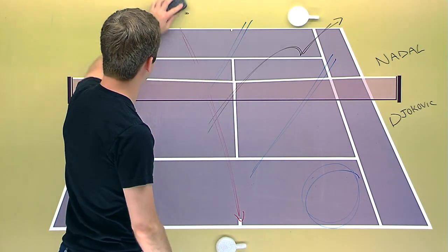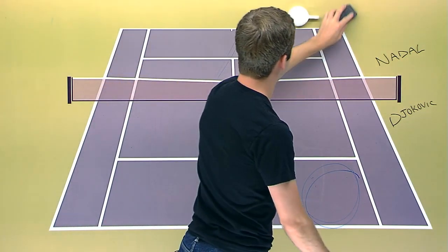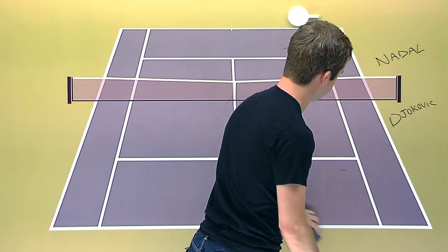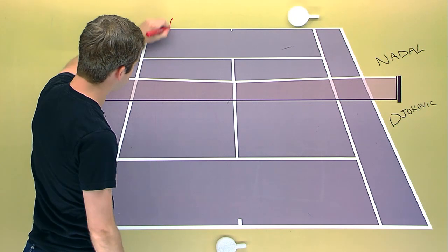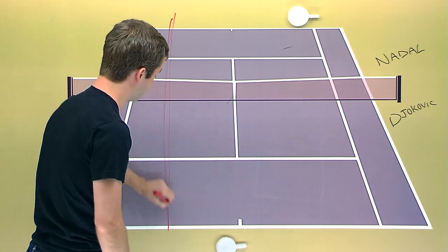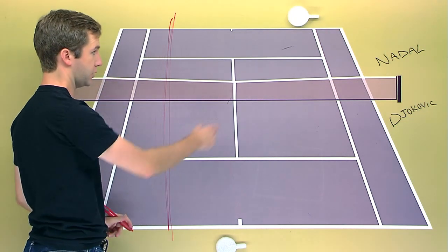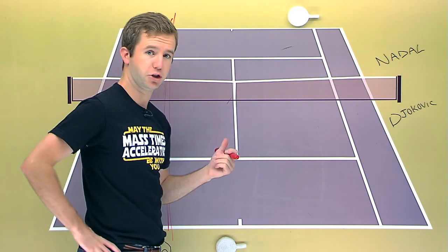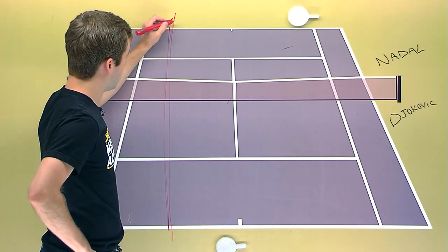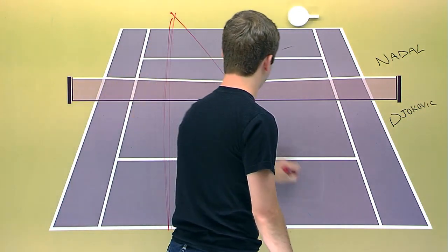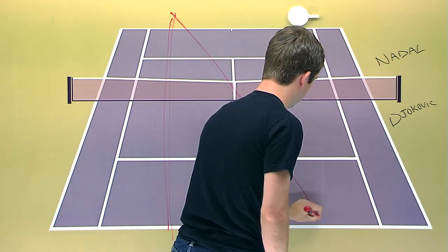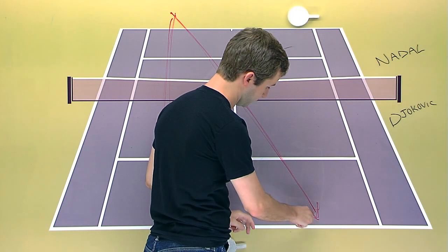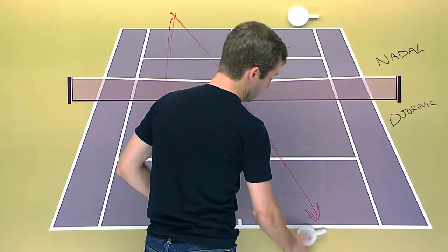My perspective now is, I think if Nadal starts to lose these down-the-line exchanges like he has in the past, they're certainly going to go down the line like this. But if Djokovic continues to have success with this particular tactic, I think what would actually be effective for Nadal is to take a lot of these backhands and just go cross-court to Djokovic's forehand over here.